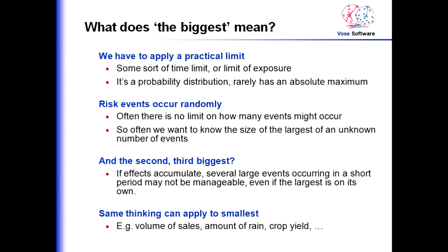We're often asking a complicated question: what is the size of the largest of an unknown number of events, where we don't even know the distribution of the size of one individual event? So we're talking about distributions inside distributions. We might not just be interested in the largest — a bank may cope with the largest loss on a transaction, but how about the second and third largest? On its own it might handle one, but if there are two or three in the same period, that may be more than it can deal with. You can also apply the same thing to the smallest — for example, the smallest amount of rain creates a drought.